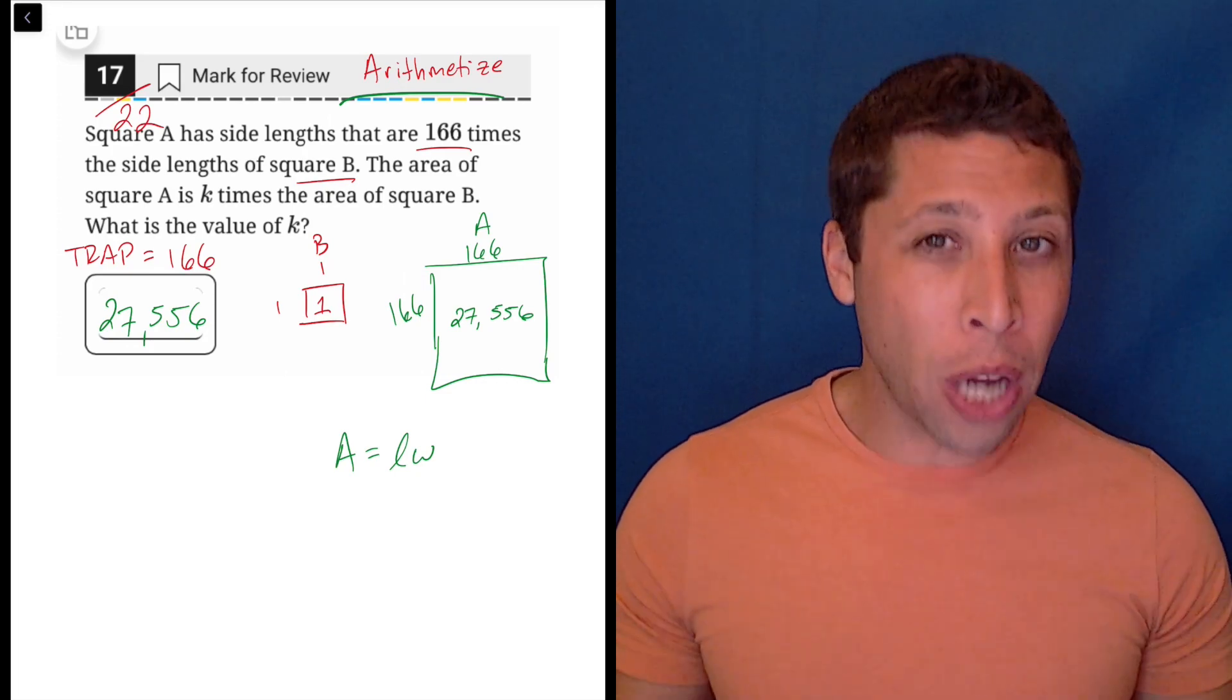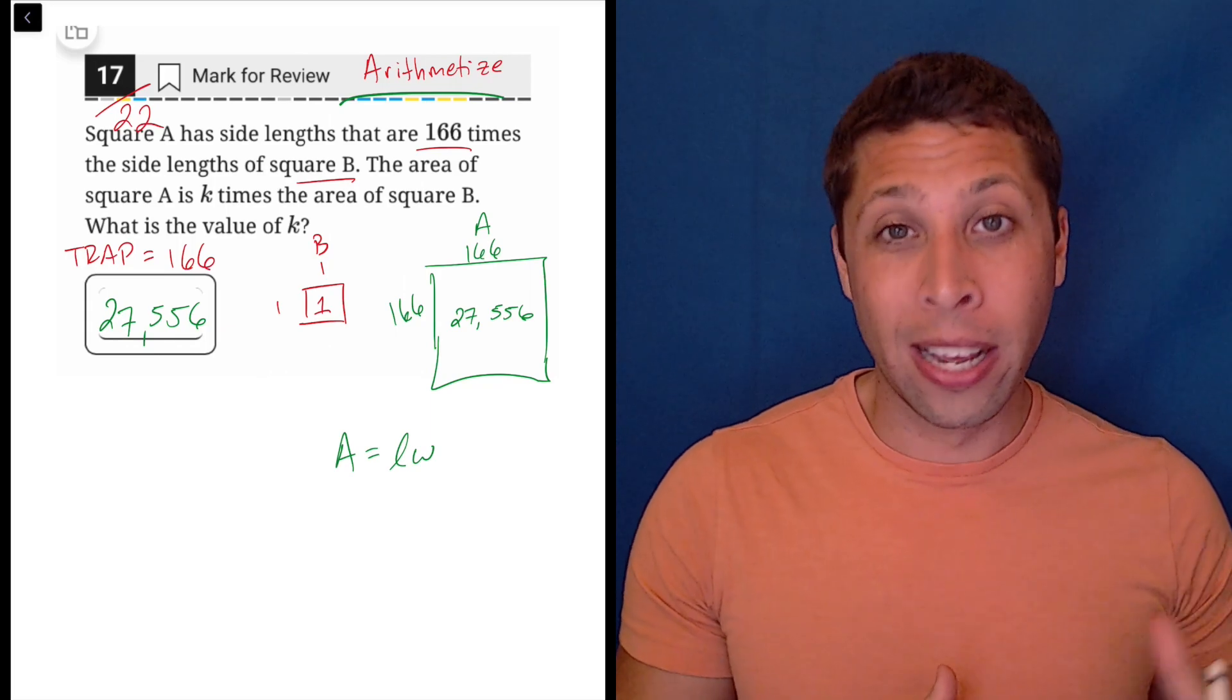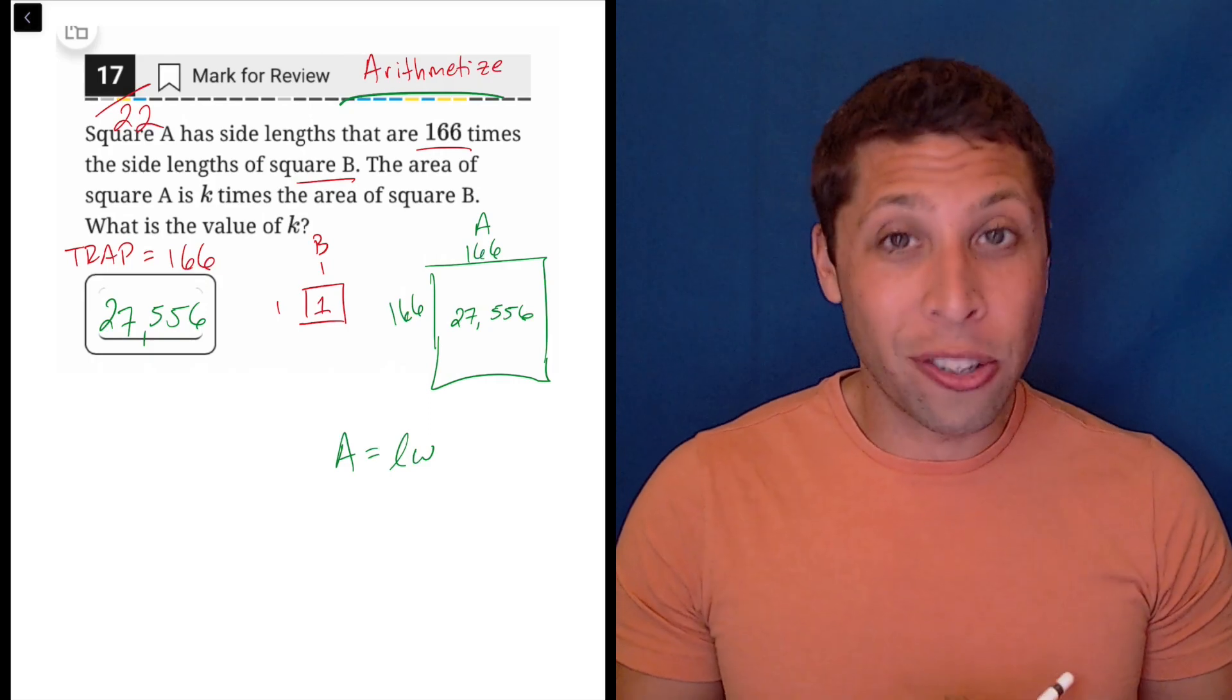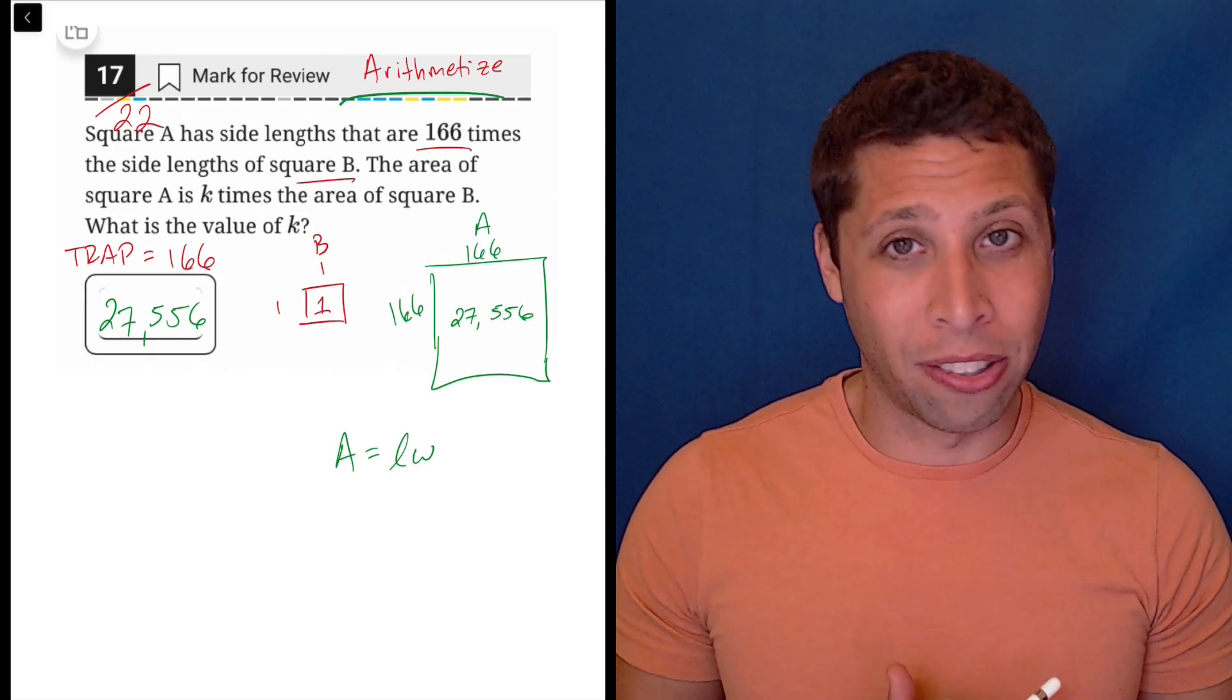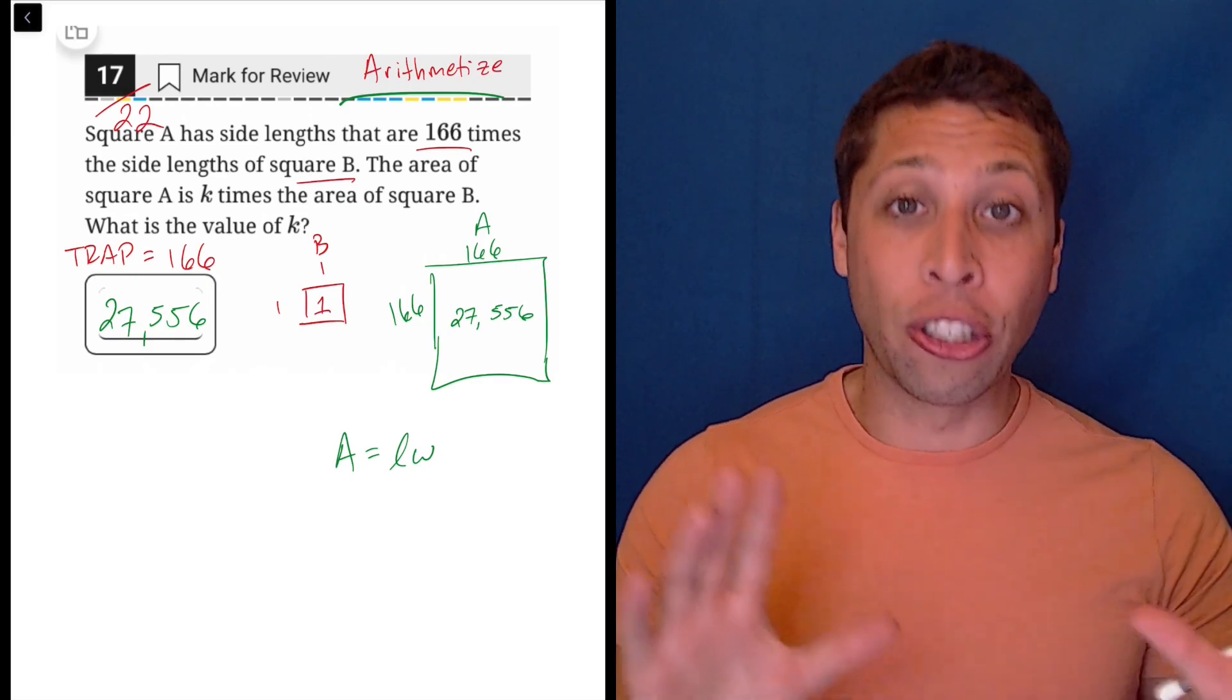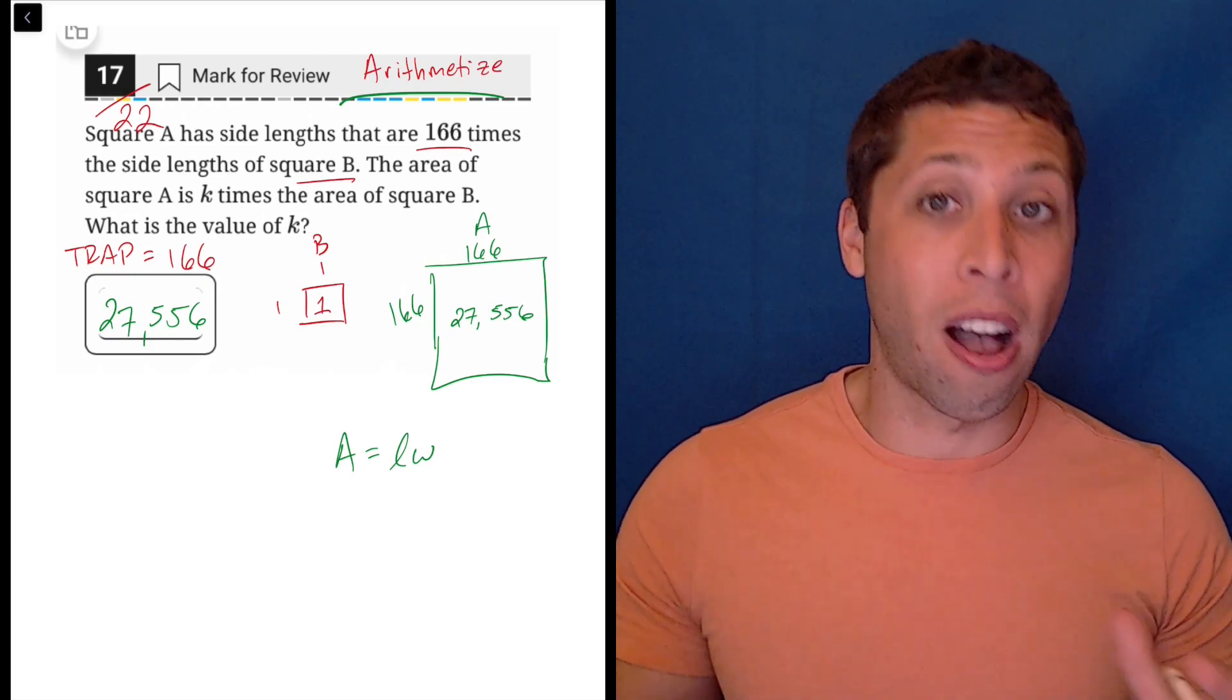But we should know if we're near the end of a section, we're going to have questions that are harder. So number 17, there's no way that 166 could be the answer. It's just way too easy. So at the very least, use that as a way to gauge what you should be doing to solve these kinds of questions.